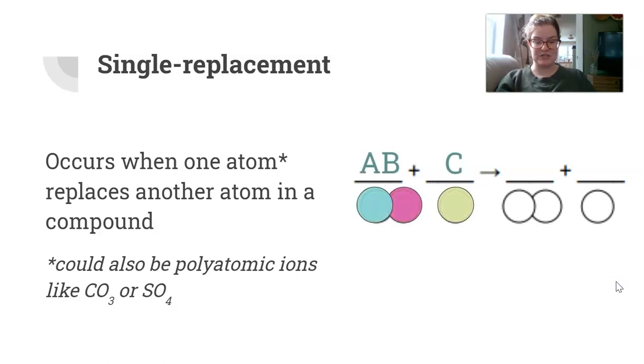Imagine this is what you're starting with: you have your AB, that's a compound, and you have C, which is the single element by itself. C is going to replace the A, and now A is the single thing. That's single replacement.